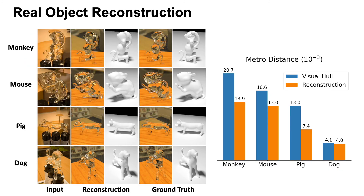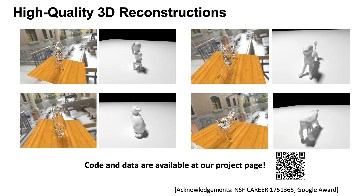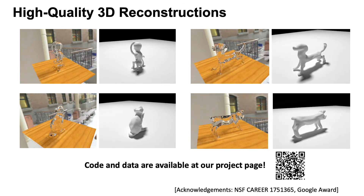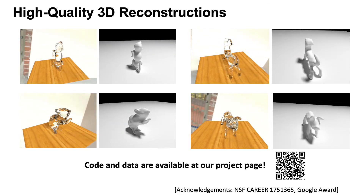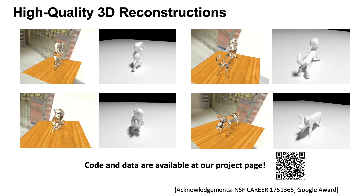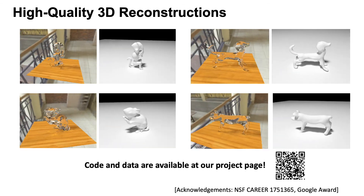We also compare quantitatively to scanned ground truth for a few shapes, obtaining low errors. We believe our reconstruction of transparent shapes will enable new applications in mobile augmented reality. Please visit our project page for more results, codes, and datasets.